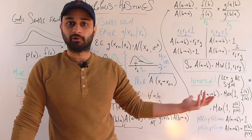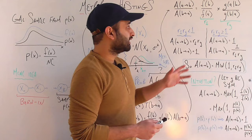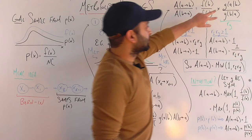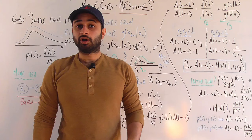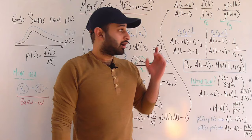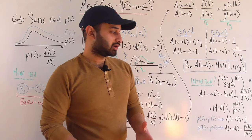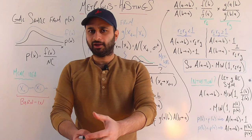Now let's talk about why this actually works — the intuition. For simplicity, consider the Metropolis case, where g is symmetric, so g(a|b) = g(b|a) and r_g = 1. The acceptance probability simplifies to min(1, r_f) = min(1, f(b)/f(a)), which equals min(1, p(b)/p(a)) since f and p are proportional up to the normalizing constant.